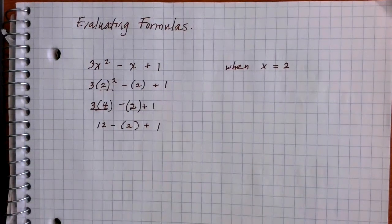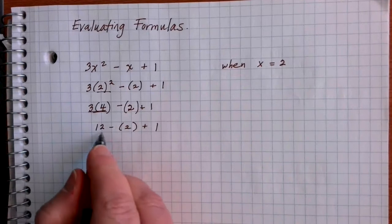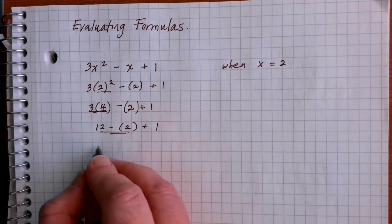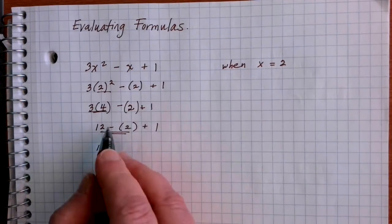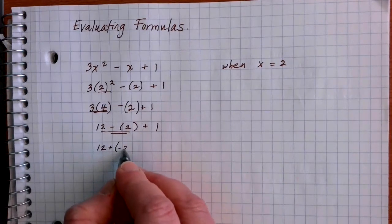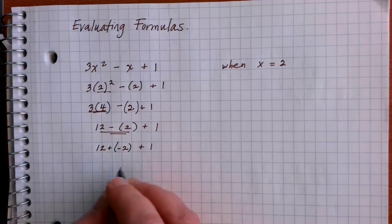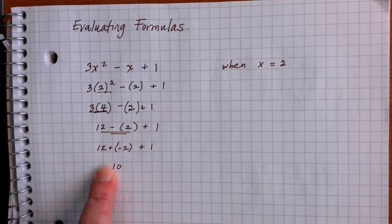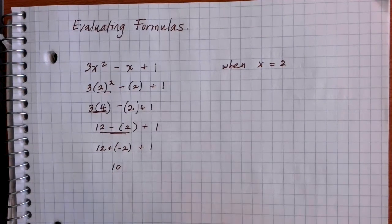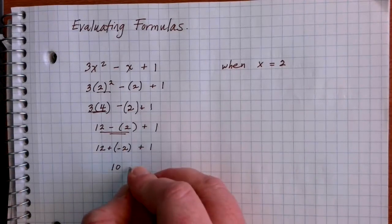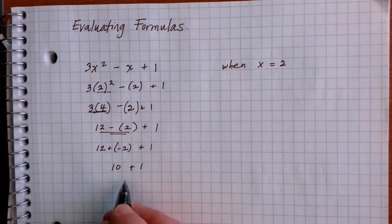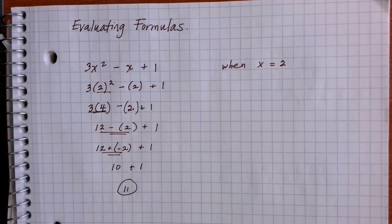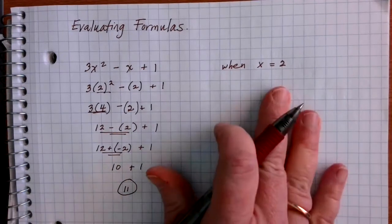Then we work on addition and subtraction from left to right. The first one is subtraction: 12 minus 2. You can change that to 12 plus negative 2 using our subtraction rules — change the minus to a plus and change the sign of the number that comes next. 12 plus negative 2 is 10. Then we end up with 10 plus 1, which gives my final solution of 11. That's the formula evaluated when x is equal to 2.